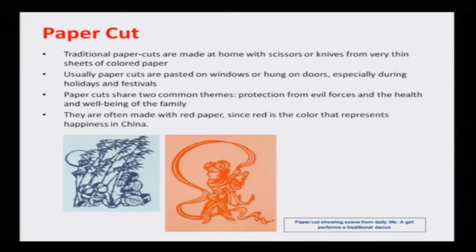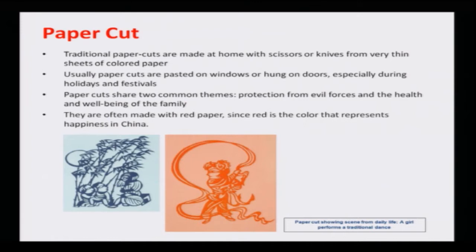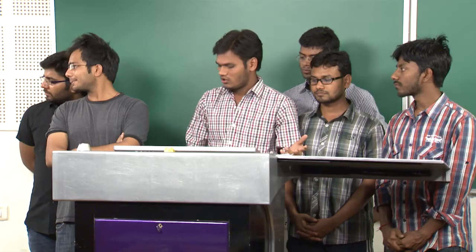Paper cuts — traditional paper cuts are made at home with scissors or knives from very thin sheets of colored paper. Usually paper cuts are pasted on windows or hung on doors, especially during holidays and festivals. Paper cuts share two common themes: protection from evil forces, and the health and belonging of the family. They are often made with red paper since red is the color that represents happiness in China. Here, one picture on the left shows an old man telling a story to young children, and another is a paper cut showing a girl performing a traditional dance.